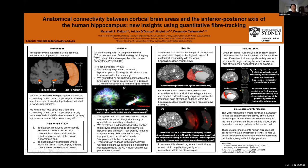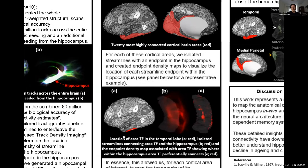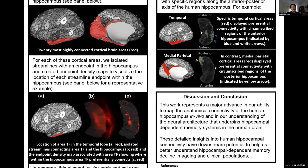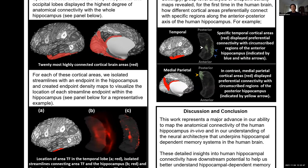Using this method, we first identified the most highly connected cortical areas, located in temporal, parietal and occipital lobes. We then created endpoint density maps for each of these areas. For example, at the single participant level, for each cortical area — in this case area TF — we isolated streamlines with an endpoint in the hippocampus and visualized where within the hippocampus this cortical area preferentially connects.